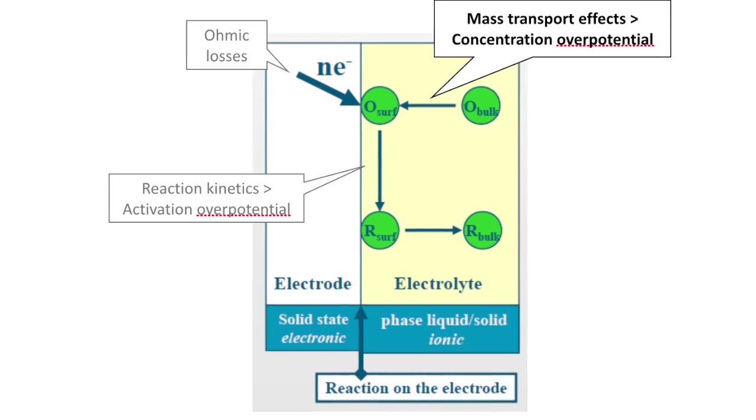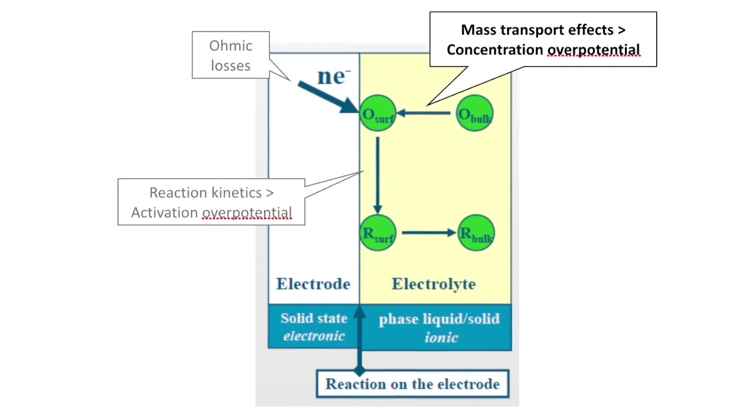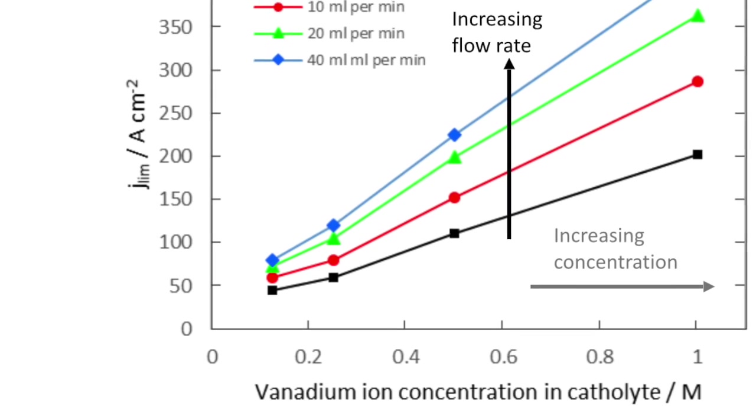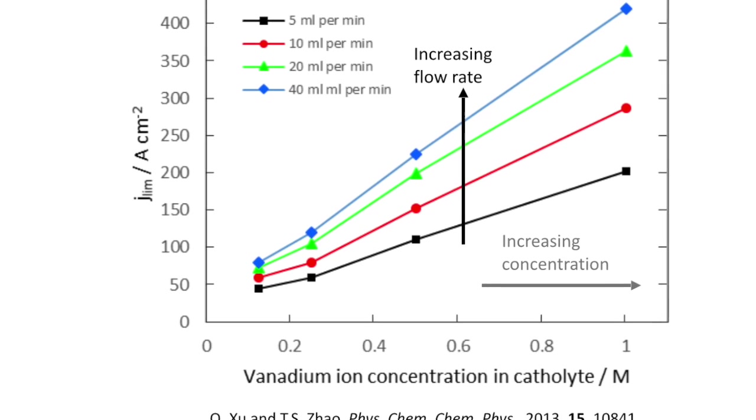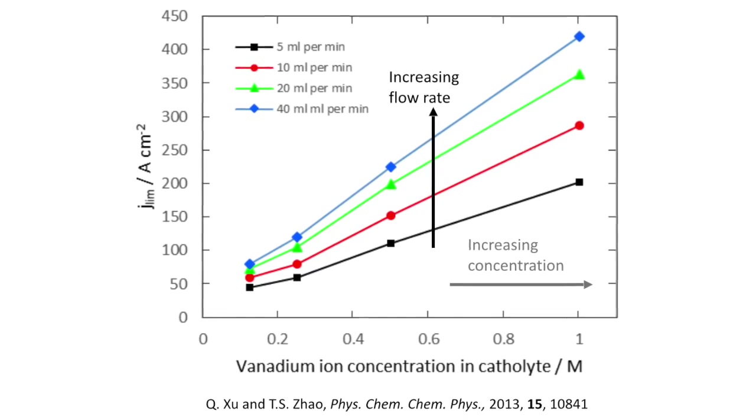Given the low vanadium concentration we are using, charging and discharging of our battery is likely to be mass transport limited. Increasing the flow rate of the electrolyte can help overcome these effects by increasing the supply of vanadium ions to the electrode surface, as can increasing the vanadium concentration.